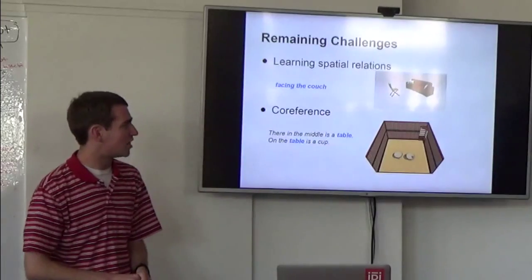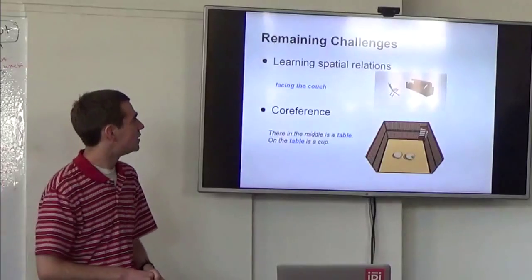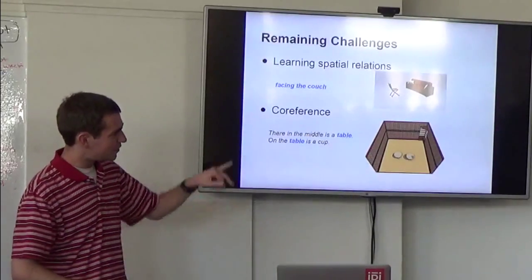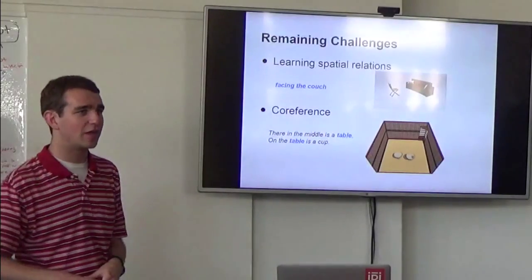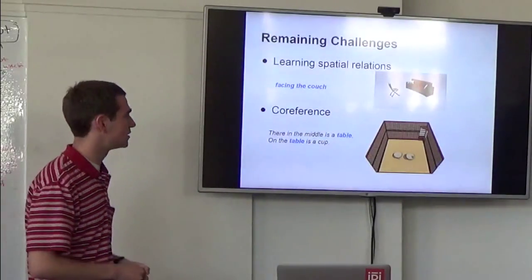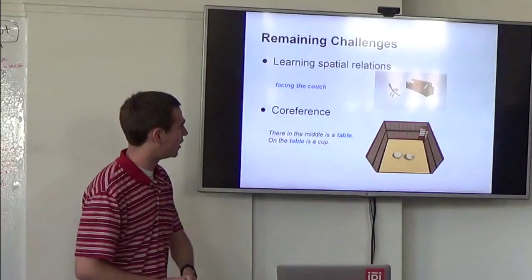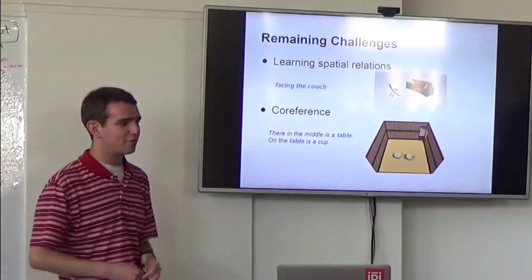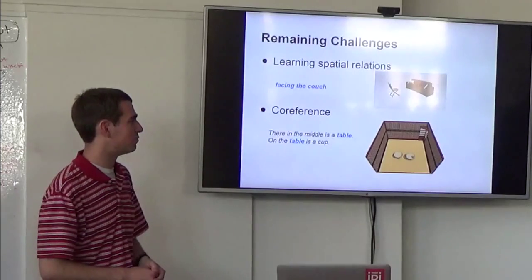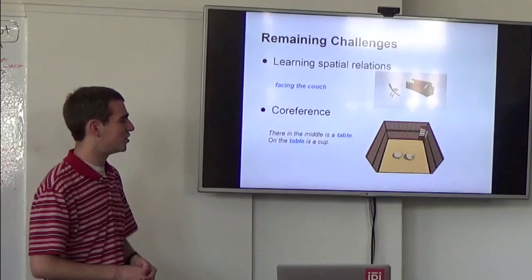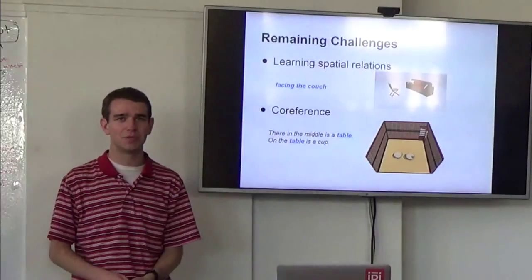So I'll close with a couple of challenges that we're looking at trying to tackle over the coming years. So we need to figure out how to learn spatial relations. So we've got a hand-built rule-based system for figuring out spatial relations. It turned out we missed facing in this case. And then the other problem that we have is coreference. And this is probably what is going on with the previous scene. But here's an even simpler example. To demonstrate it, we say there on the middle is a table, on the table is a cup. And voila, we've got two tables because we mentioned table twice.